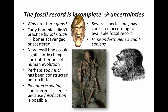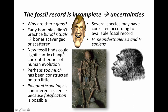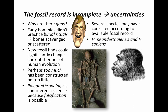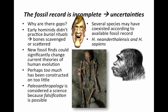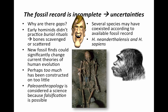There are gaps in the fossil record, probably because early hominids didn't practice burial rituals like we do. We preserve our remains, and 200 or 300 years from now it will be easy to dig up cemeteries and find out about what we were like, because we've kept good records. Paleo-anthropology is considered a science because falsification is possible — if new evidence comes up, it could totally change our current theories, and we're willing to do that because we are scientists.